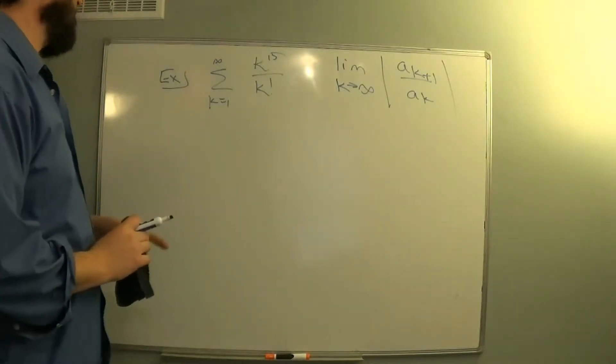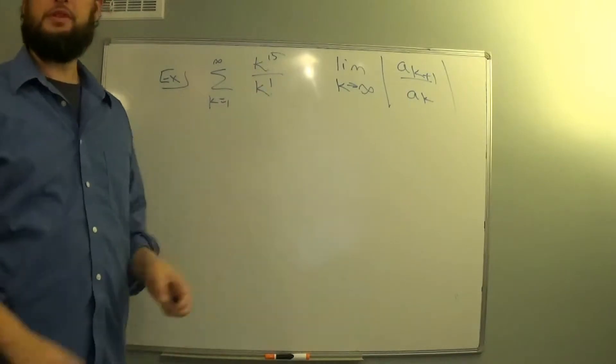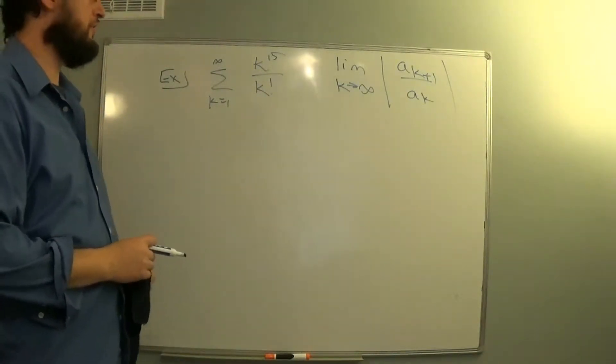In this example we'll apply the ratio test to the series k to the 15 over k factorial to determine whether it converges or diverges.